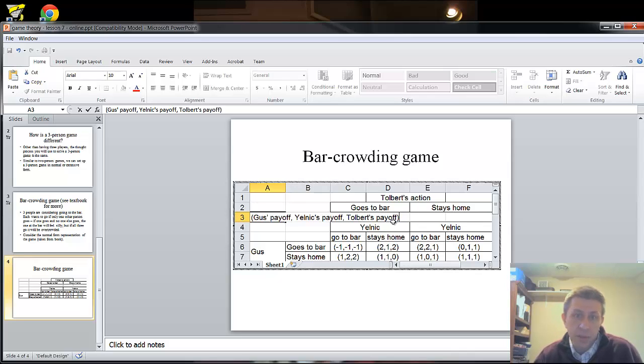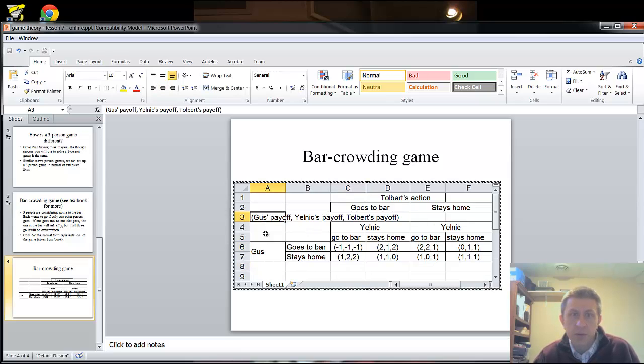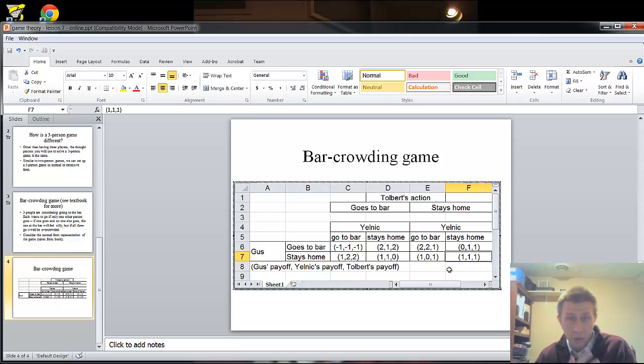So if all three go to the bar, the bar is overcrowded, they each get a payoff of minus one. If they all stay home they get a payoff of one, and the payoff of one is universal here. If you stay home by yourself, you always get a payoff of one. You don't care what the other people are doing. If you can get to the bar with just one other person, you get a payoff of two.